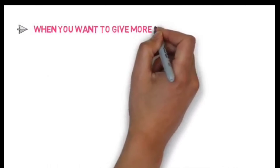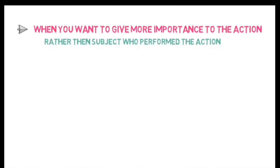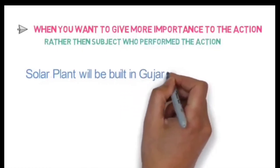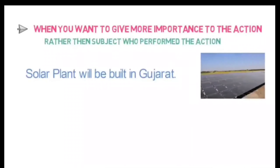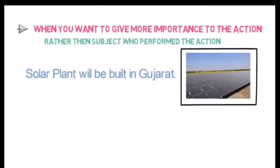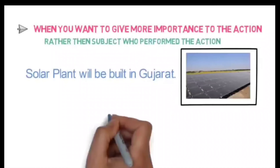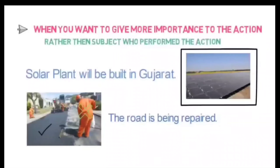The second case for using passive voice is when you want to give more importance to the action rather than the subject who performed it. For example: 'Solar plant will be built in Gujarat.' Here we give more importance to the object — the solar plant — rather than who is building it. Another example: 'The road is being repaired.' We are not interested in who is repairing it, but in the repair activity itself.